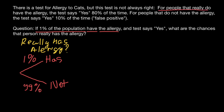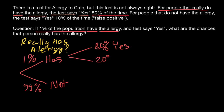We also know that for people that really do have the allergy, the test says yes 80% of the time. So 1% of the population are allergic, and if we test this 1%, in 80% of the cases we are going to get a yes result. That means another 20% are not going to test positive — they do have allergy but because the test is not accurate, 20% of those people would test negative. We call these false negative.